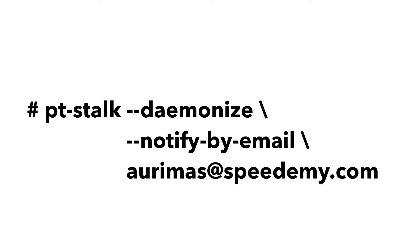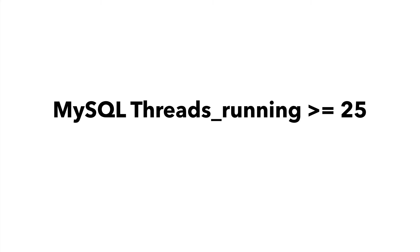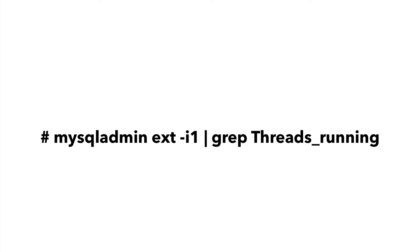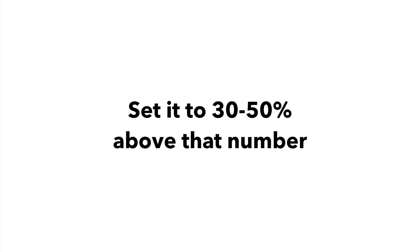I tend to send it to background and ask it to send me an email whenever an issue occurs. The default condition for a MySQL stall is when threads running reaches 25, meaning that there are 25 or more commands running concurrently in MySQL — most often meaning 25 or more website users waiting for a request to complete. It may not be the right number for your server. You should run the following command during a busy period for 20 minutes or so to see what the usual level of threads running is, and then set it to 30 to 50% above that number.